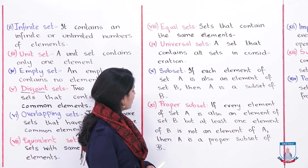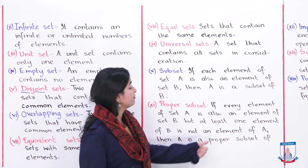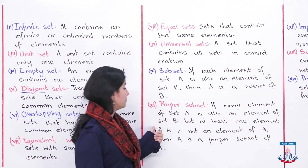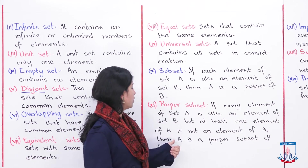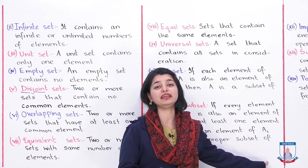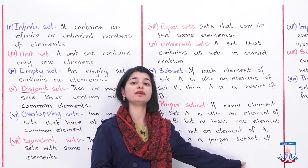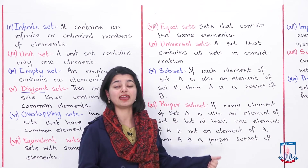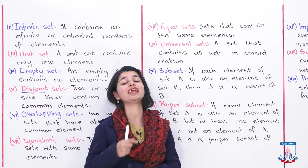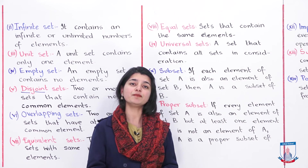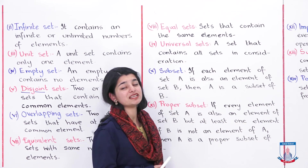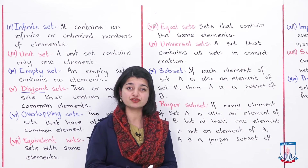Then we have proper subsets. If every element of set A is also an element of set B, but at least one element of set B is not an element of A, then A is a proper subset of B.